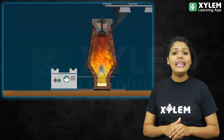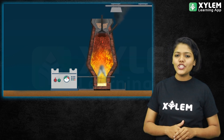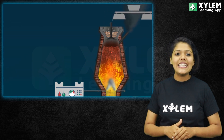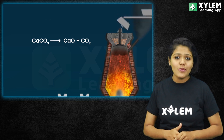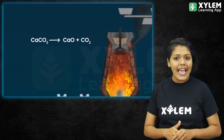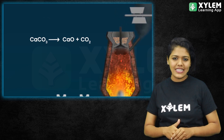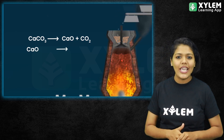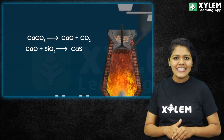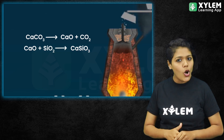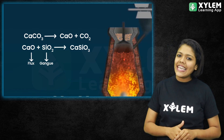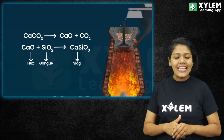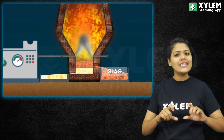Calcium carbonate, that is limestone, gives calcium oxide and carbon dioxide: CaCO3 gives CaO + CO2. Calcium oxide reacts with hematite's gangue, SiO2, to form calcium silicate: CaO + SiO2 gives CaSiO3. Calcium oxide is called flux, SiO2 is called gangue, and CaSiO3 is called slag. The iron and slag can be found at the first outlet.